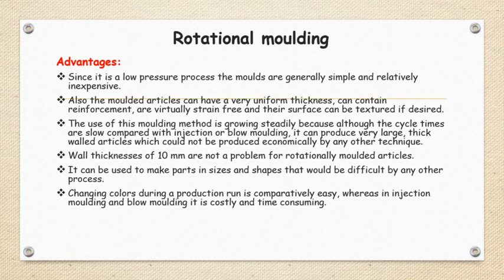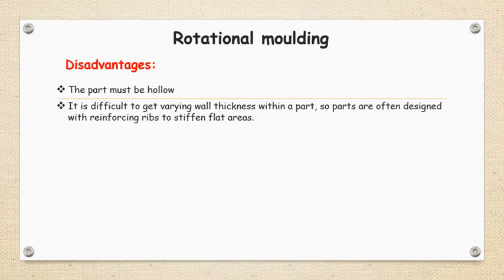Next advantage: wall thickness of 10mm are not a problem for the rotation molding articles. It can be used to make parts in sizes and shapes that would be difficult by any other process. Changing colors during the production run is comparatively easy, whereas in injection molding and blow molding it is costly and time consuming.